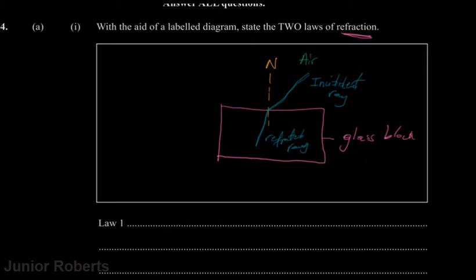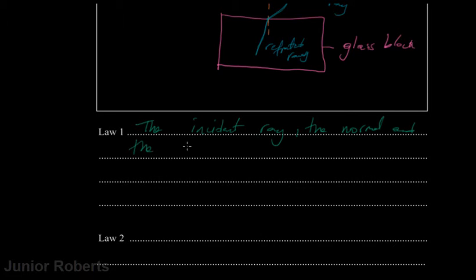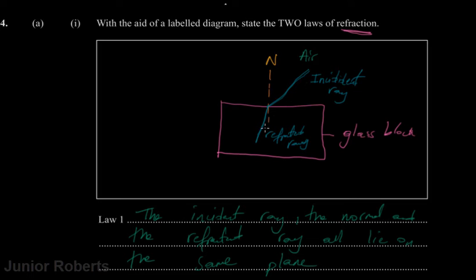The first law of refraction states that the incident ray, the normal, and the refracted ray all lie on the same plane. We have our incident ray, our refracted ray, and our normal — which is just an imaginary line — and they all lie within the same plane.